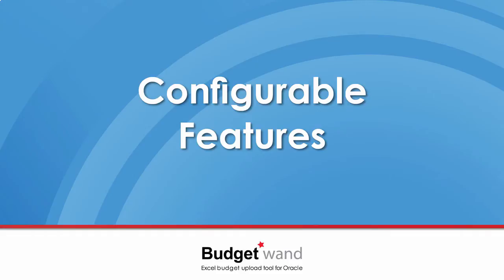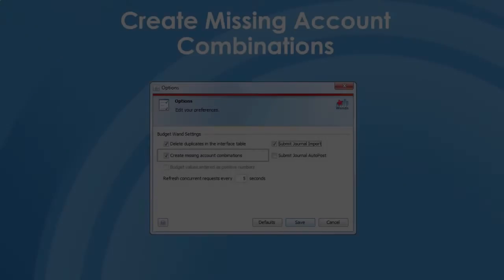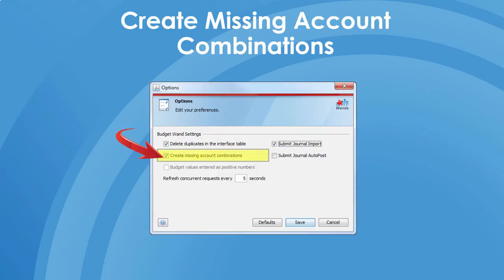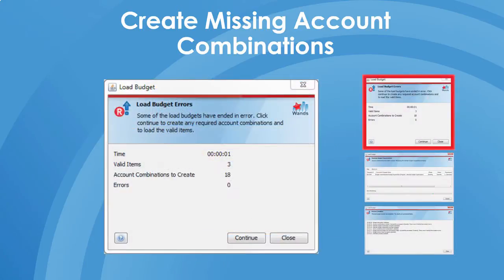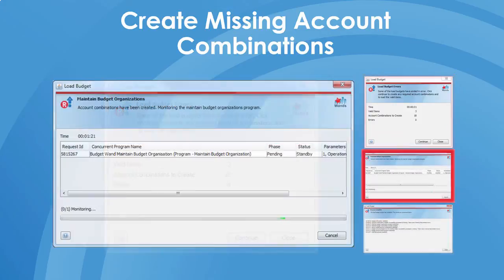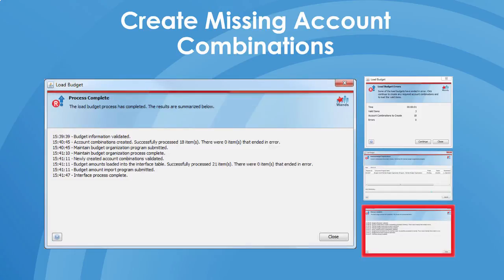Users of Oracle Budgeting often complain about the frustration of having to resolve a missing code combination midway into a budget load when using other tools. We therefore included an option to automatically create account code combinations should they not exist, and also initiate the Maintain Organizations Concurrent program to ensure the new account combination is assigned to the relevant budget organization before processing continues. This allows a much more seamless budgeting process and saves time.